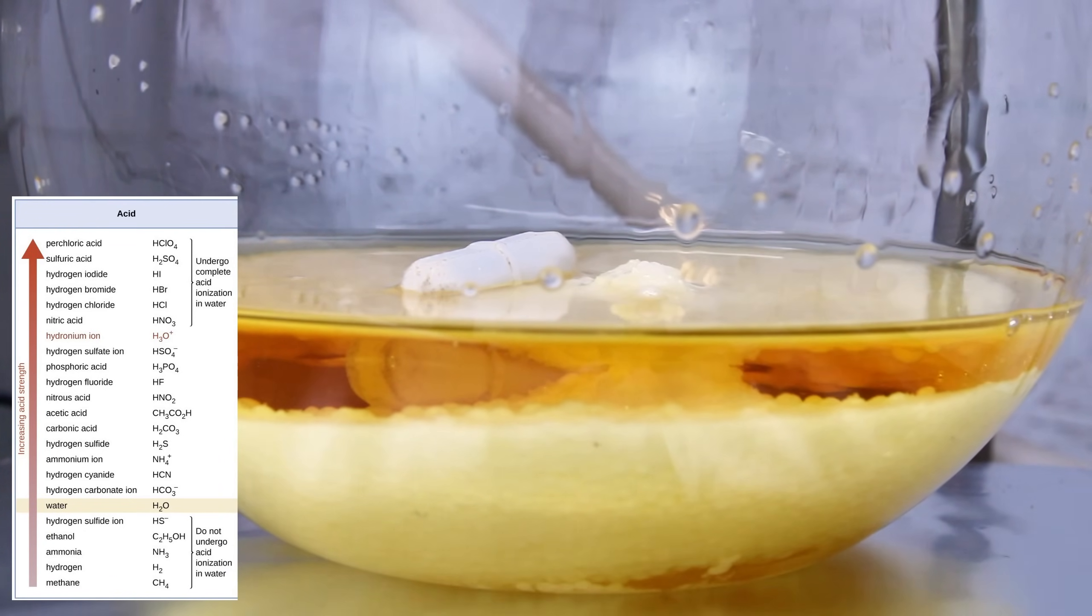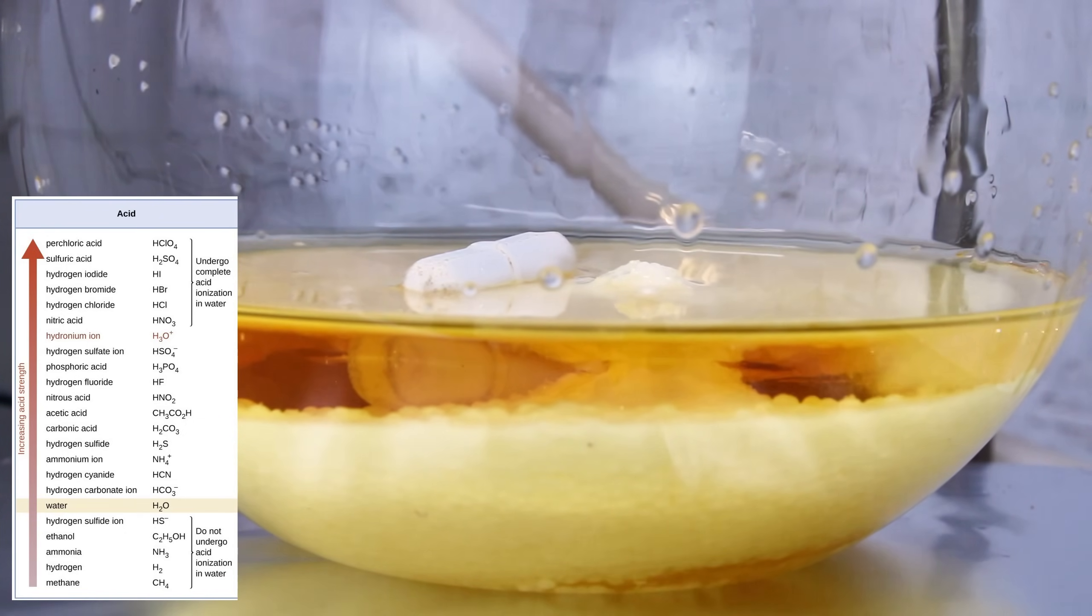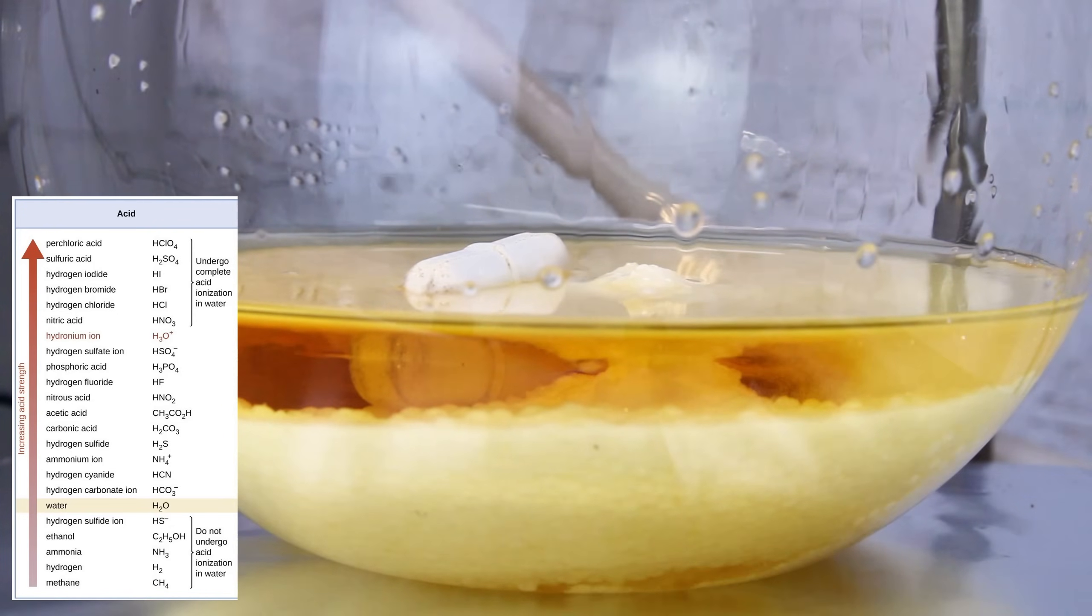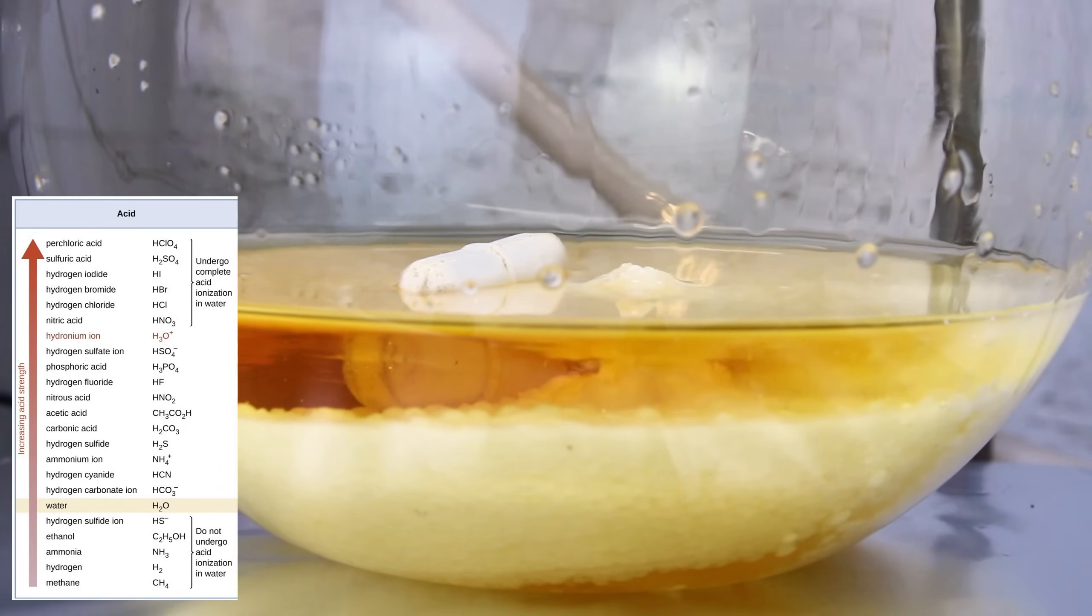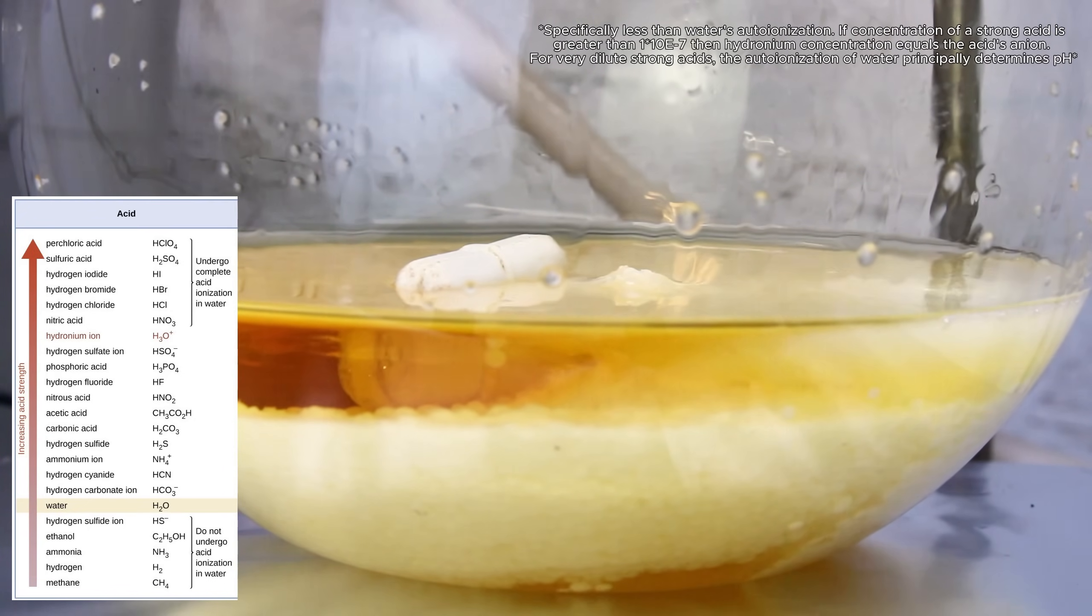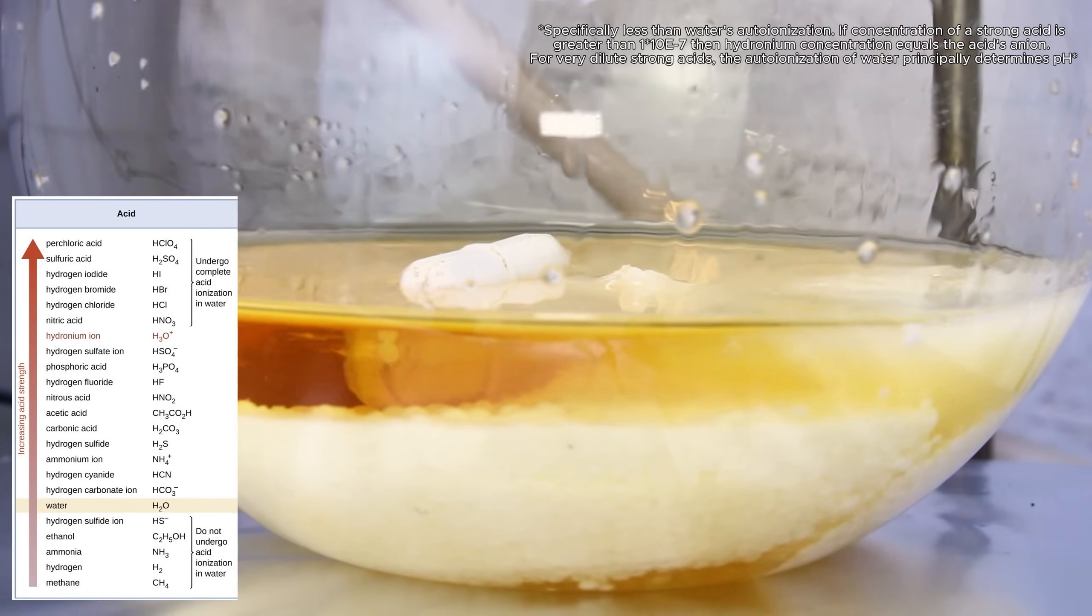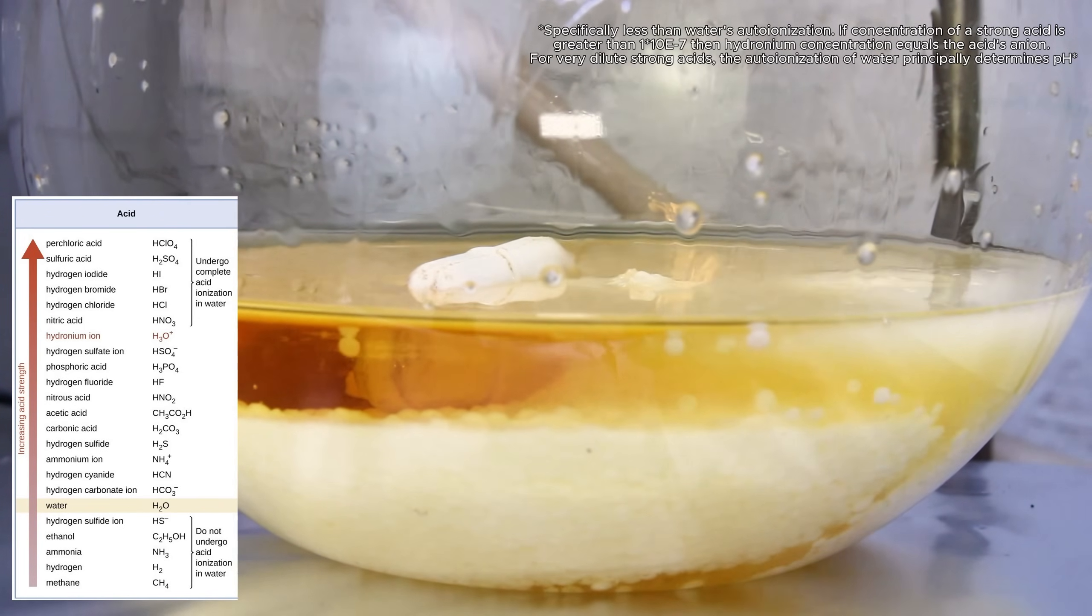To this point, when we discuss the relative strength of an acid, we're really discussing the affinity for hydrogen that an acidic anion has relative to water. All acids are composed of an anion bound to hydrogen, and any acid with a lower affinity for hydrogen relative to water will lose 100% of their hydrogen cations when dissolved in water, which we call a strong acid.